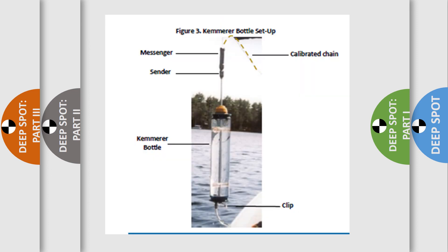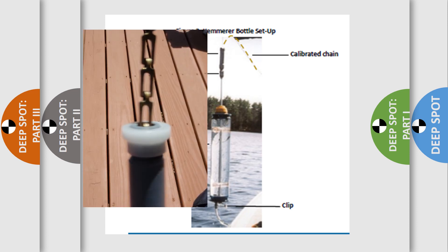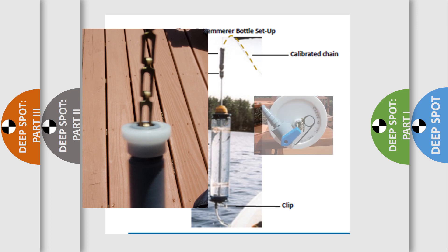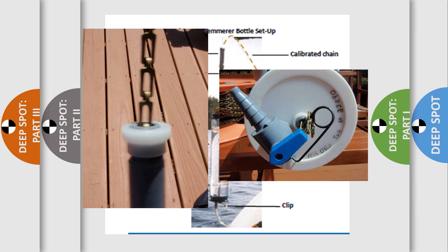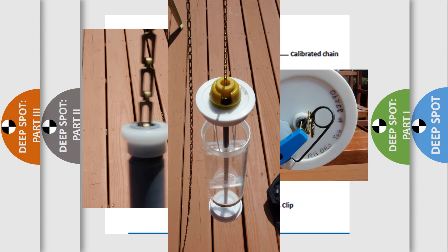Next, you will use a Kemmerer bottle to collect the samples. To set up the Kemmerer bottle, thread the calibrated chain or rope through the rod in the middle of the bottle. Clip the chain securely on the end so we don't lose the bottle. Then check to make sure the clip is secure by holding the bottle from the chain.